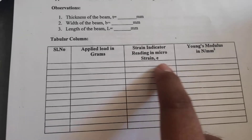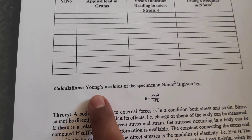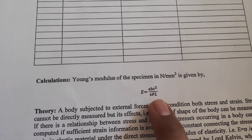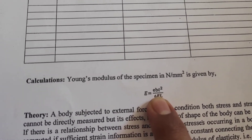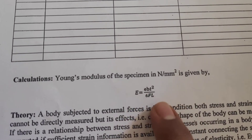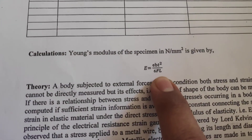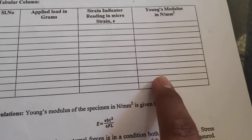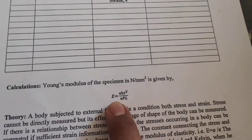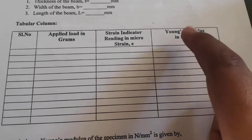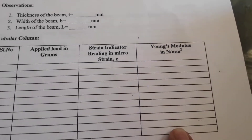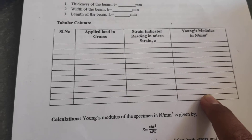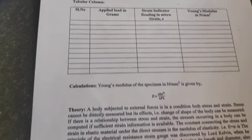Once the tabular column is done, you have to do the calculation using the given formula. Here, small e is your microstrain; b, t, and l are the initial observations you have made; and capital F is the load. For each corresponding load, calculate the Young's modulus E. You will get 10 Young's modulus readings, and the average of those 10 readings will be your final result.